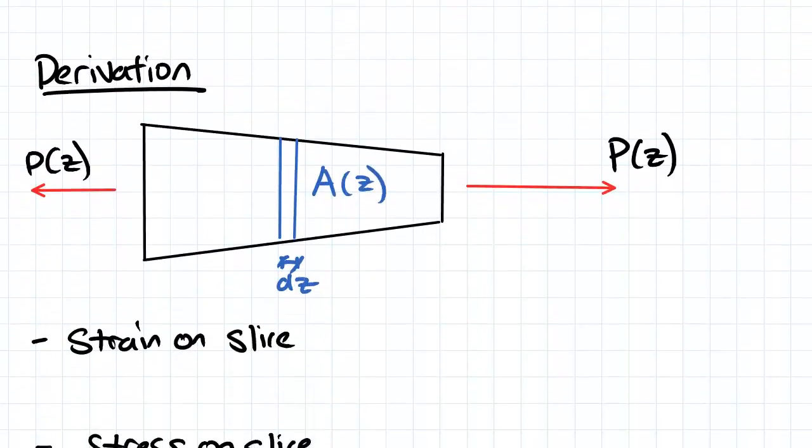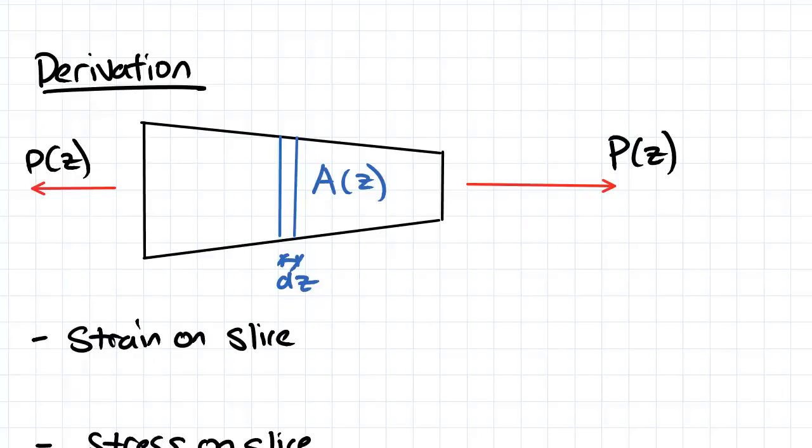So what we've got here is a cone-shaped volume, we've taken a slice straight down the center, and we've got a changing area A(z).